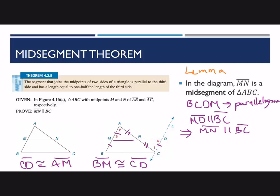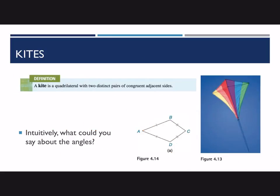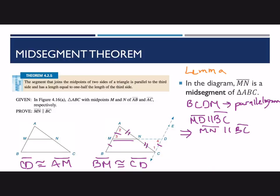You can work from here to show that MN is half the length of BC — it's not too many more steps. If you need to see the complete details, see the example in the textbook, which walks through all the steps and reasons. So that's it for this video. To summarize: kites have two distinct pairs of congruent adjacent sides, and for mid-segments, the important facts are that they're parallel to the third side and half its length.